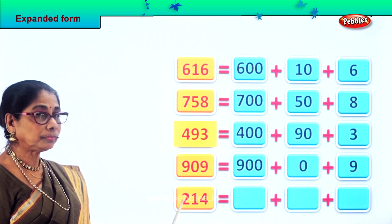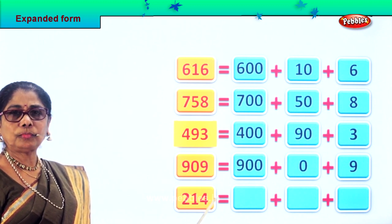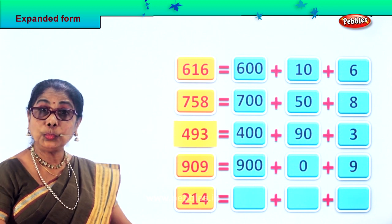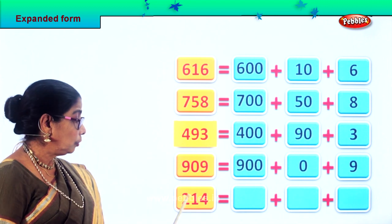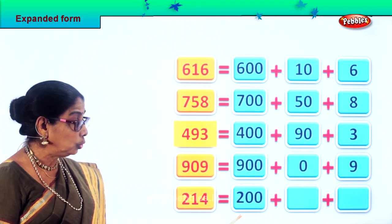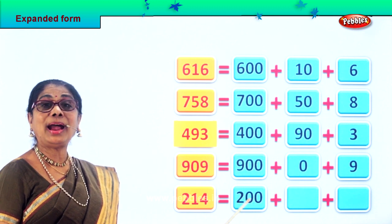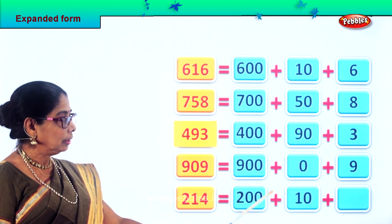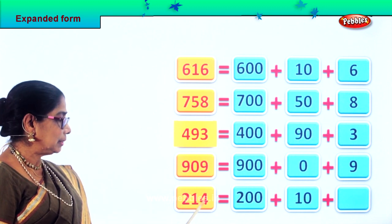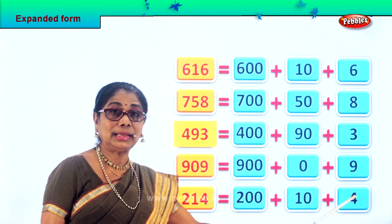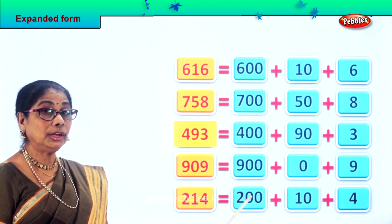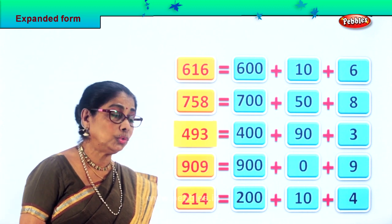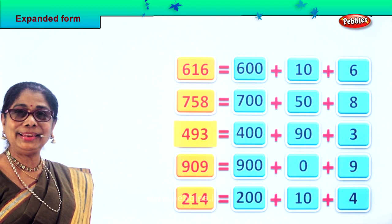Next number: 214 — two hundred and fourteen. We're going to expand it. How many hundreds? Two — so two hundred. Plus one ten, which is ten. Plus four ones. That makes up two hundred and fourteen. 214 equals two hundred plus ten plus four. Did you enjoy?